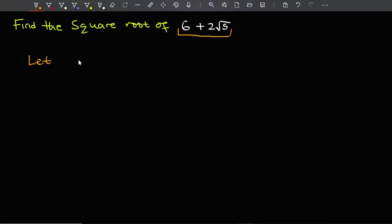So I'm going to begin by letting the square root of 6 plus 2 root 5 be equal to plus or minus, let's say, root x1 plus root x2. I'm assuming x1 and x2 are integers. So there we go now.